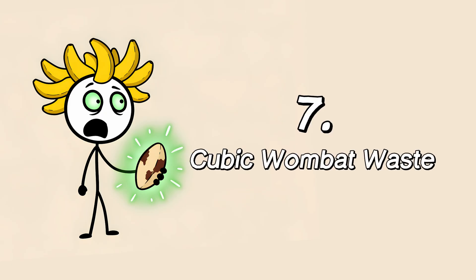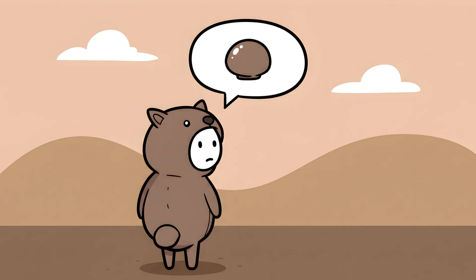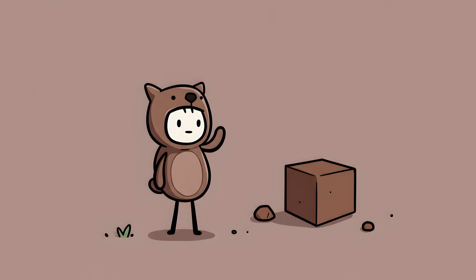Number seven, cubic wombat waste. You're a wombat. You're a stout, furry, burrowing marsupial. You are, for all intents and purposes, a living, breathing, slightly grumpy beanbag chair. Based on your round, soft physique, one would expect your output to be similarly round and soft. But you, you magnificent little weirdo, defy all biological and geometric logic. You poop cubes.